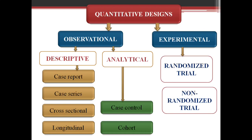In experimental study we have two designs: randomized controlled trial and non-randomized trials. In non-randomized, the only difference is participants are not allocated randomly — they will know which group they are participating in. Randomized trial always has a better advantage than non-randomized. All these study designs will be dealt with in detail in later classes. This is all about epidemiological study design — a very broad classification: observational and experimental.